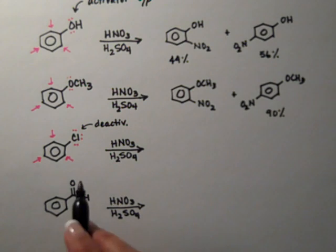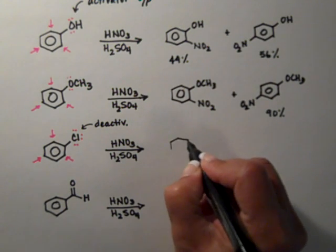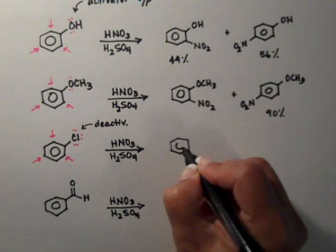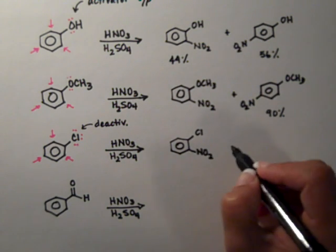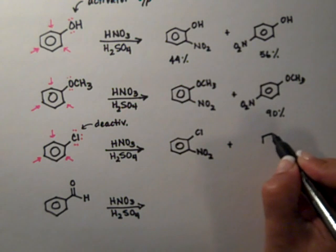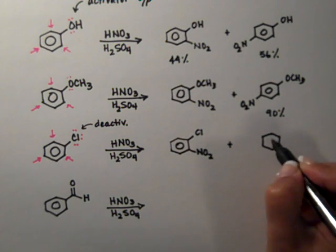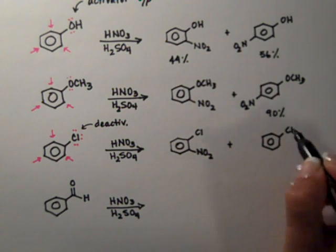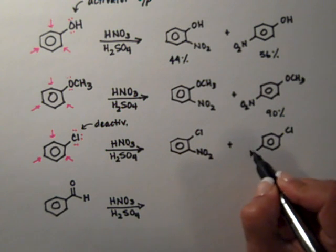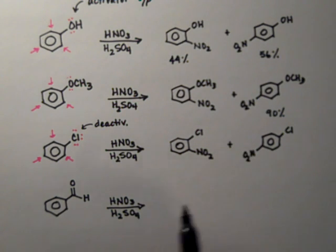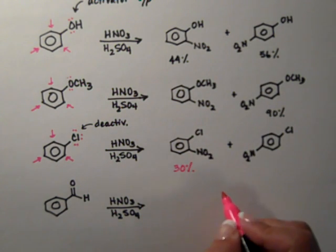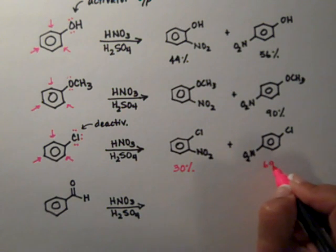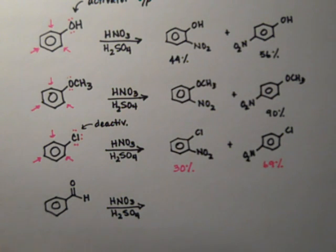So the nitro group is going to be on the ortho and the para positions on the ring. Halides are special because they're the only deactivators that are ortho-para directors. In terms of the yield, we get 30% of the ortho and we get 69% of the para.